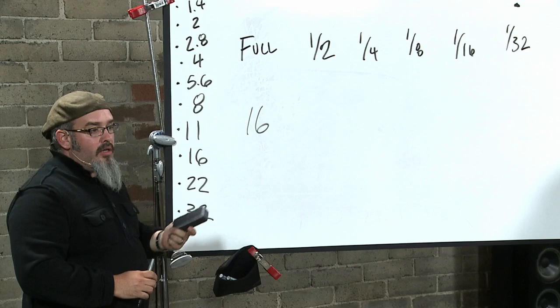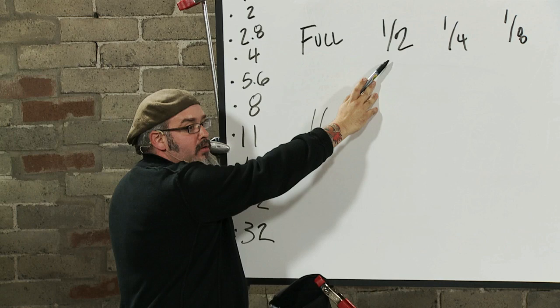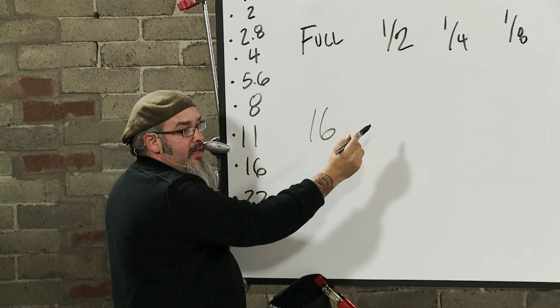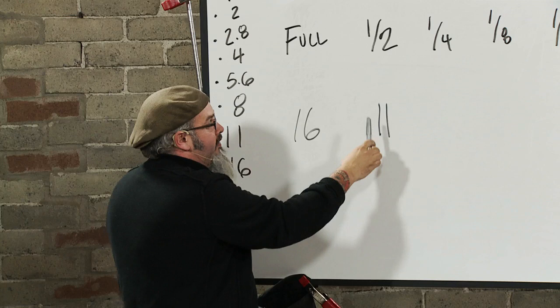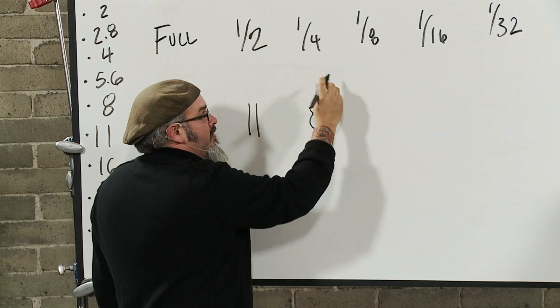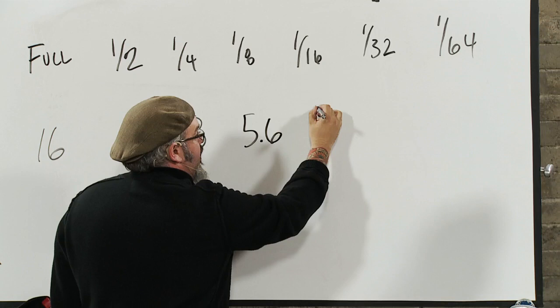Well, if these are one-stop increments and these are one-stop increments, I can start to count this out. If at f/16 I'm at full power, if I cut my power in half I lose one stop. So if I'm at full at f/16, at half I should be at f/11. If I cut this power again in half, I've lost one stop of light. So if I go from full to half, I went from 16 to 11. If I go from half to quarter, I'm at f/8. If I go to eighth, I'm going to be f/5.6. I go to sixteenth, I'm at f/4. And I could get down to f/2.8 if I wanted.